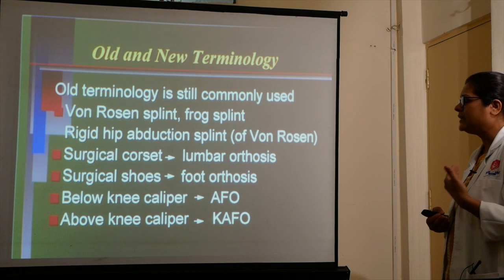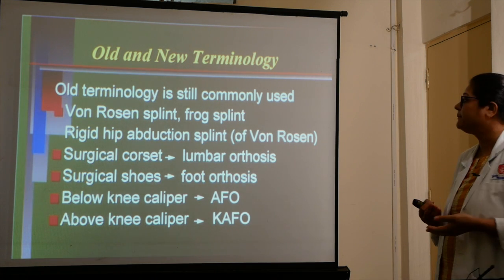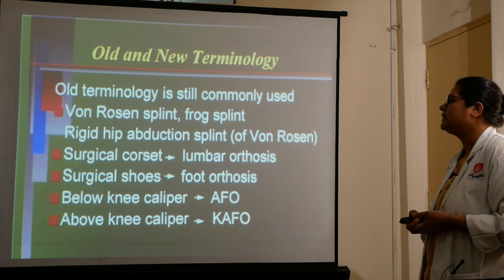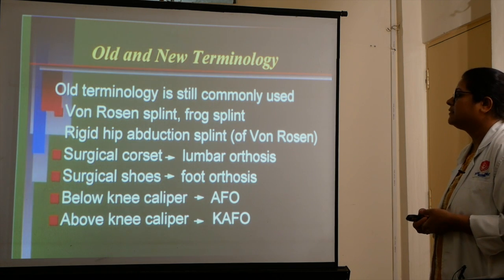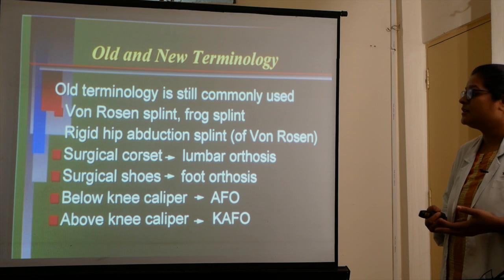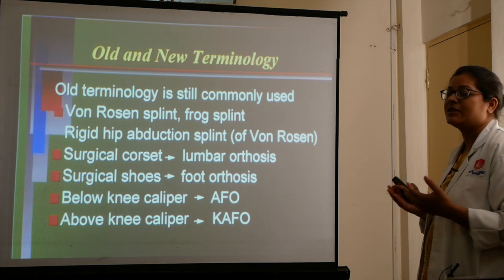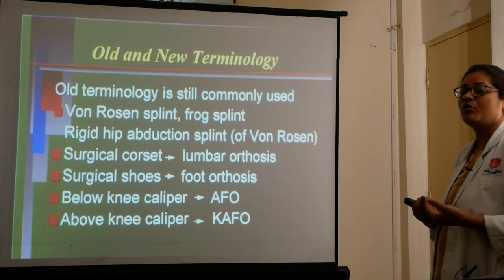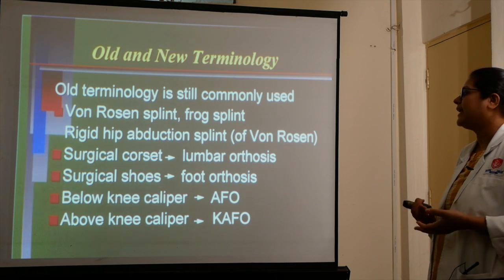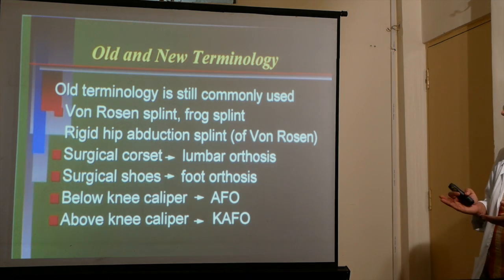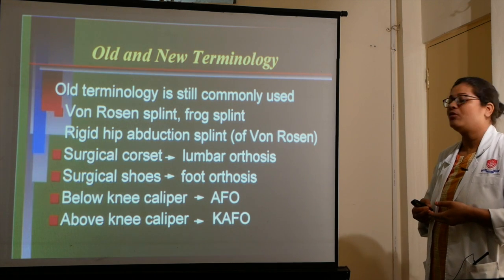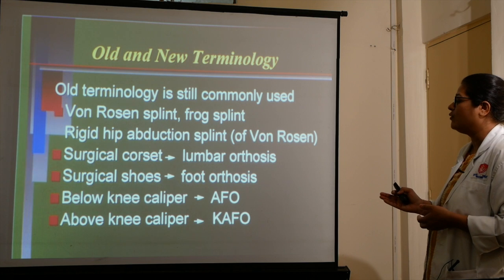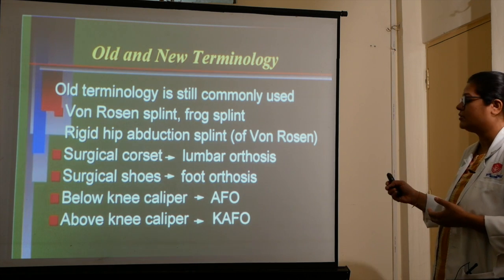Keep in mind that old terminology is still commonly used. There are many splints, such as the Von Rosen splint (frog splint), rigid hip abduction splint, surgical corset which we call lumbar orthosis, surgical shoes, foot orthosis, below-knee calipers (AFO — ankle foot orthosis), above-knee caliper (KAFO — knee ankle foot orthosis).